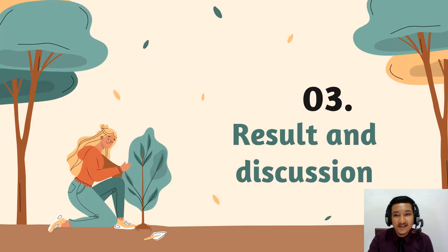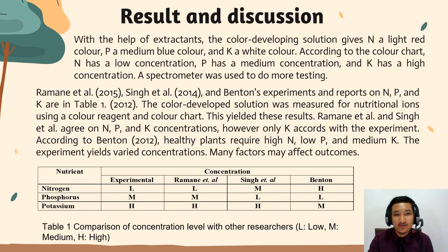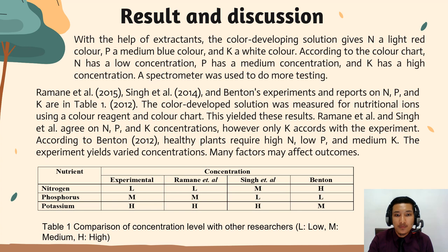For the result and discussion: the samples had low concentration, medium concentration, and high concentration. A spectrometer was used to do more tests. Remaner 2014 and Benton's experiment results on NPK are reported in Table 1. The color development was measured for nutritional ions within a color region and color chart, yielding these results.